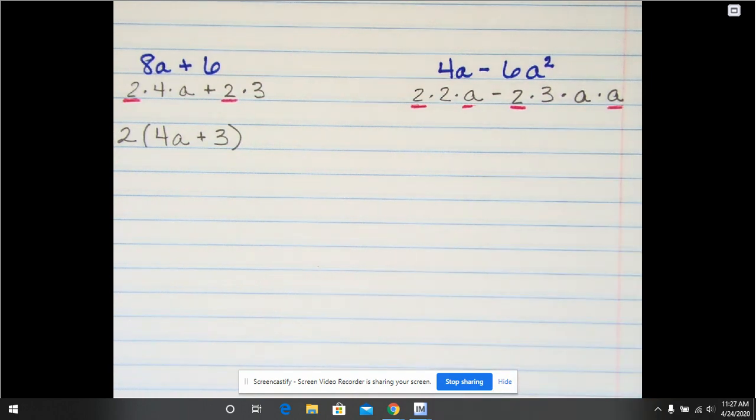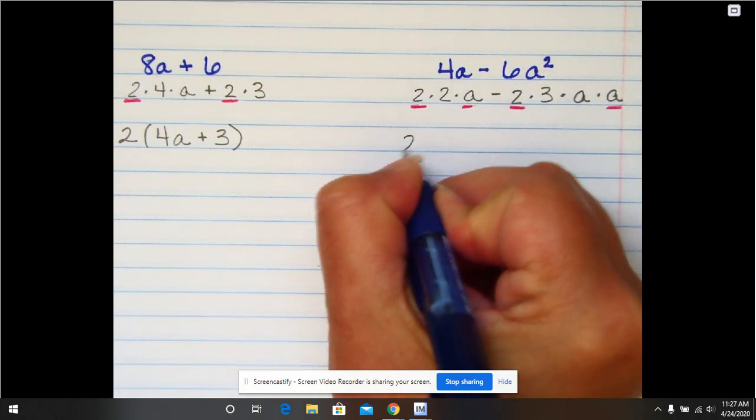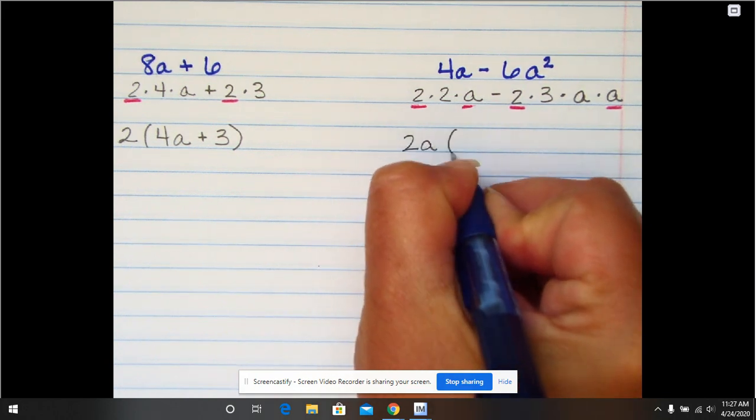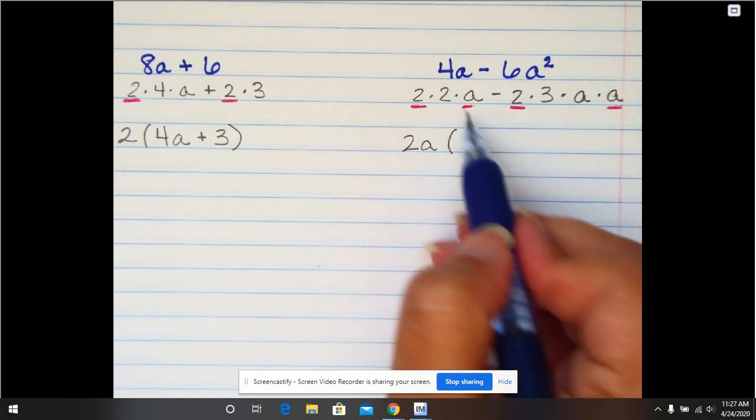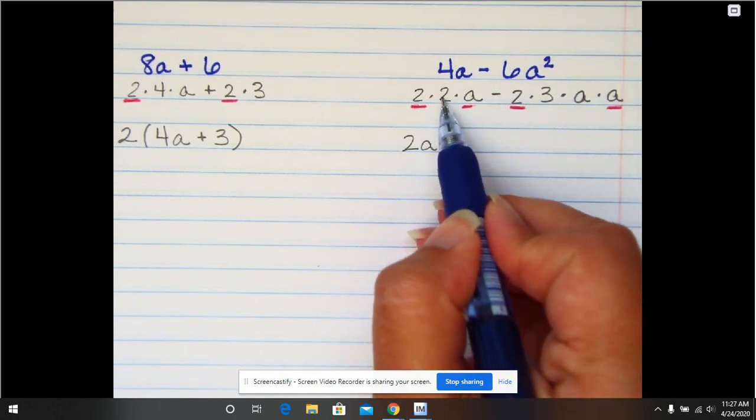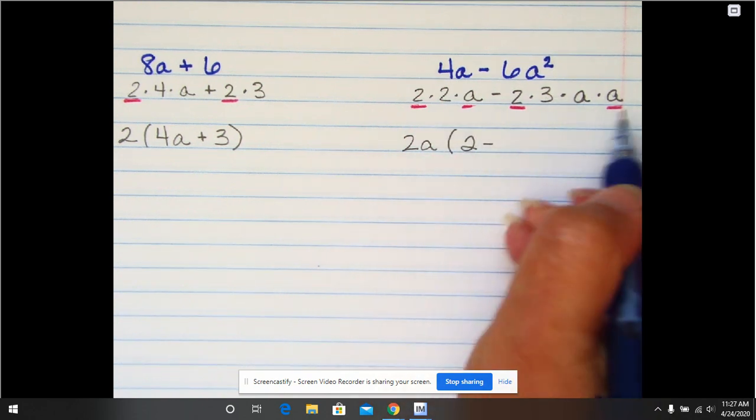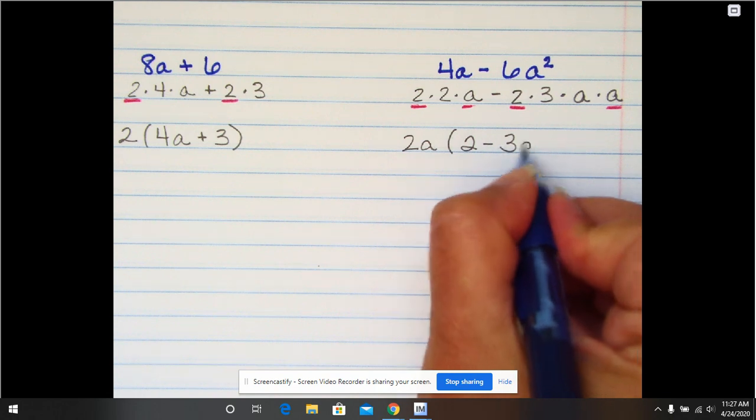So I'm going to factor out, that's the phrase that we usually use, 2a, write the parentheses and then I'm going to include in the parentheses everything that didn't get factored out. 2 minus 3a.